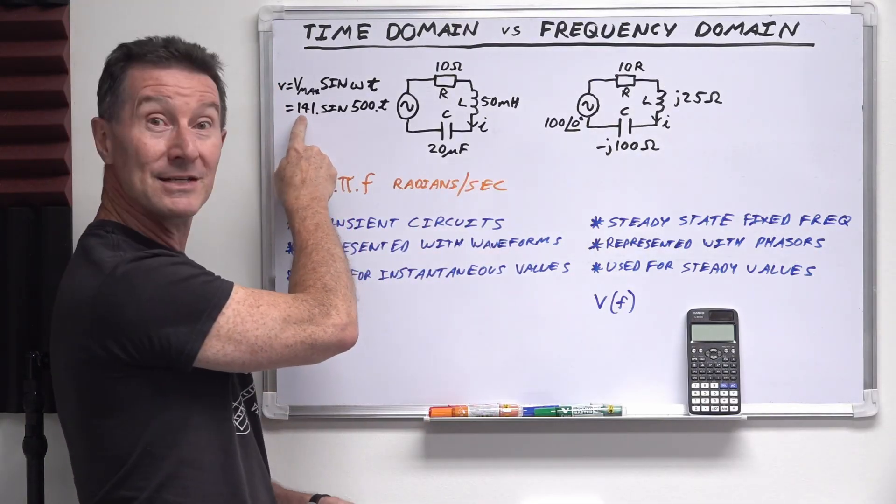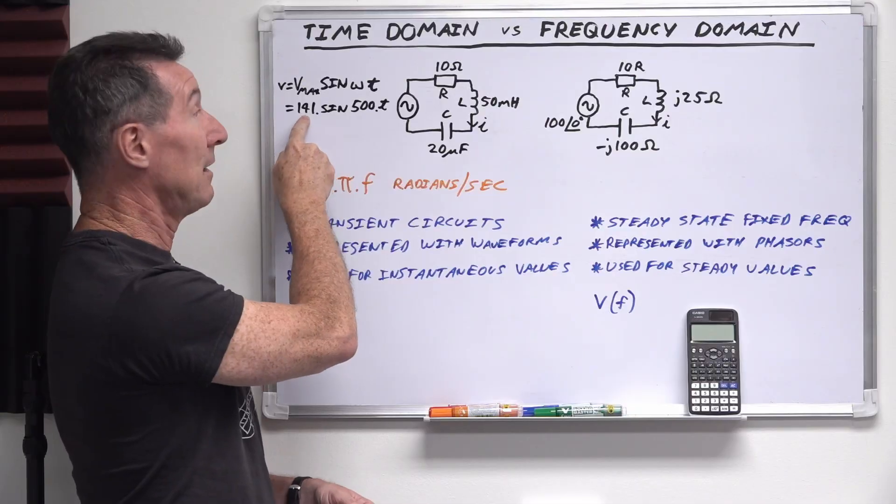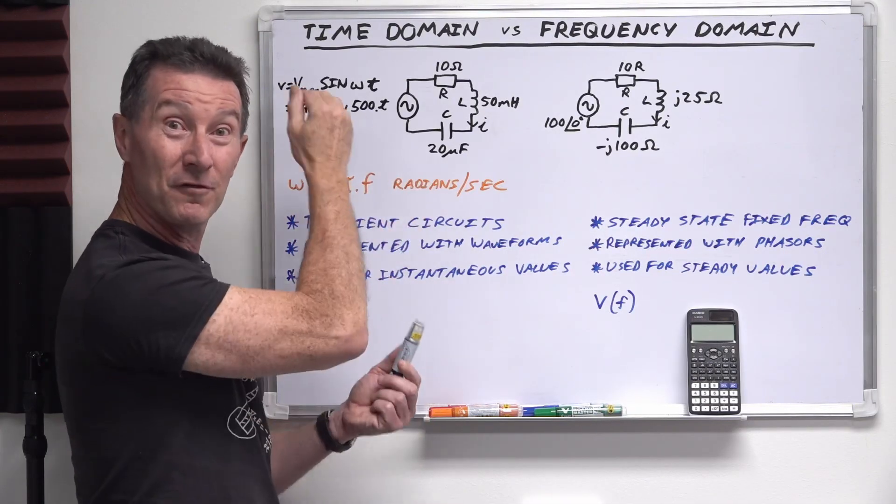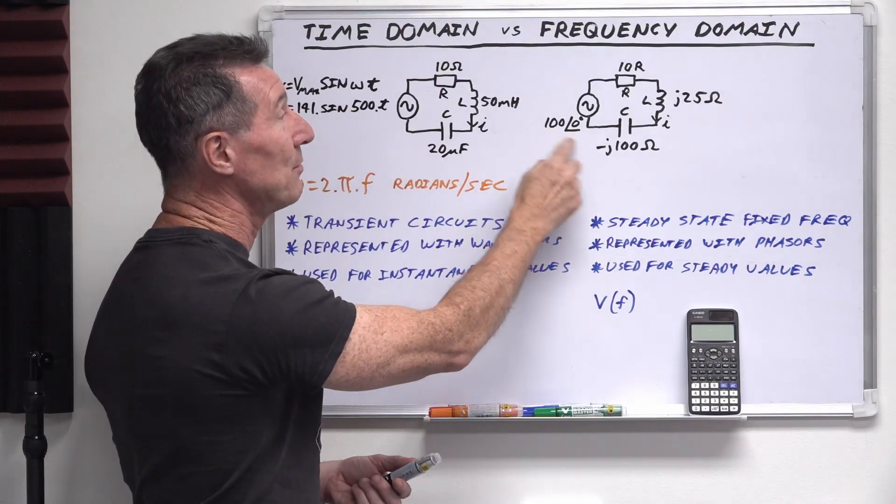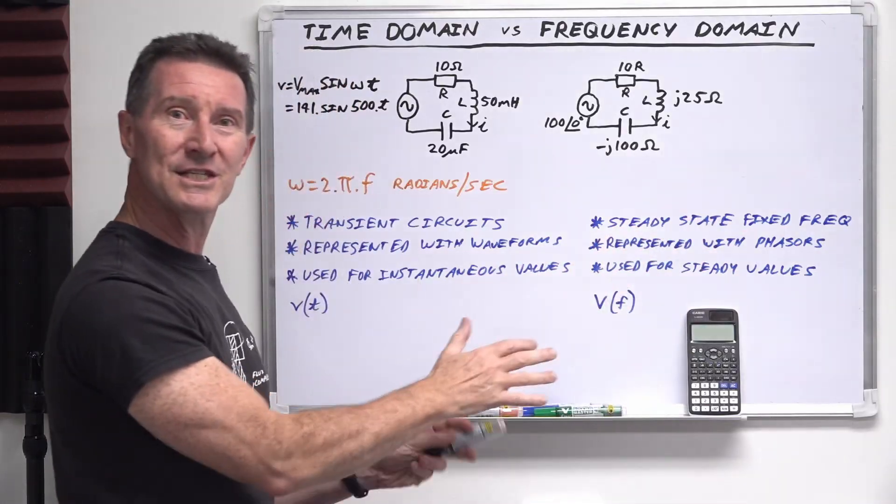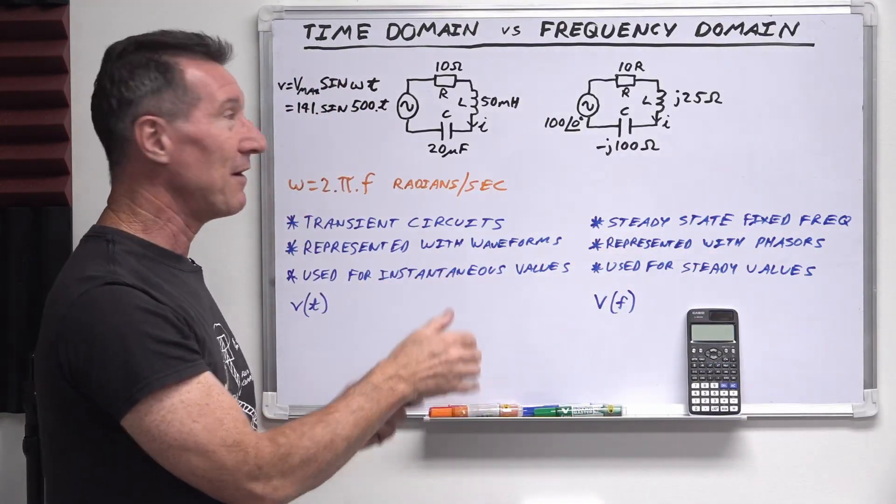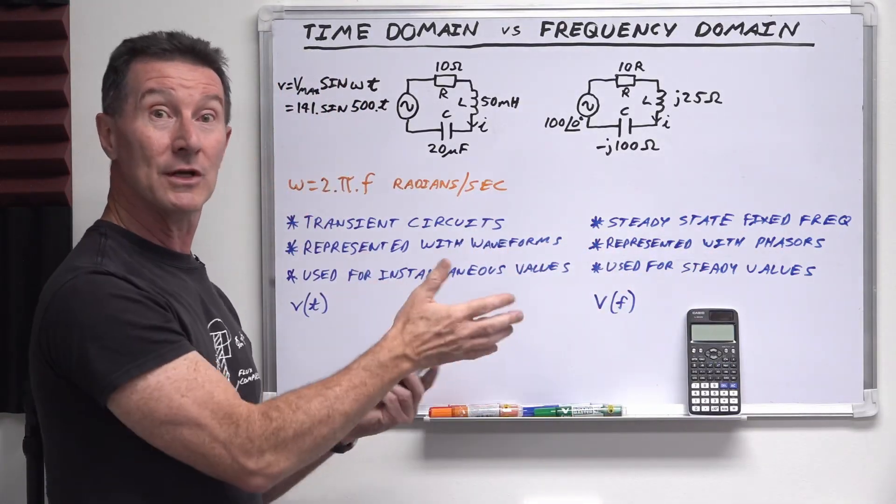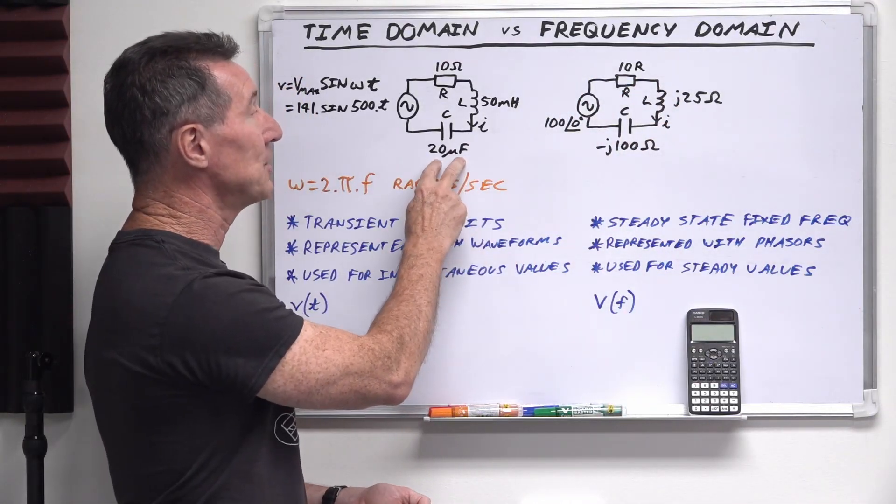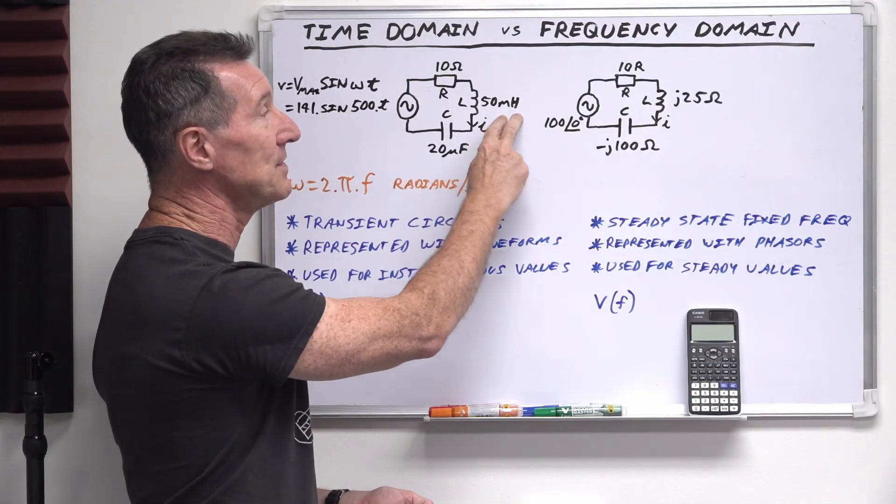But basically, this is a phasor representation in polar form. So, of course, v max is the peak voltage. If it's 141 volts, and you multiply that by 0.707 from peak to RMS, and you're dealing with an RMS value here. Hence why this is useful for steady state fixed frequency stuff. And in steady state, you can simply work in like RMS values. And because of that, we're no longer talking in terms of farads and henrys here.